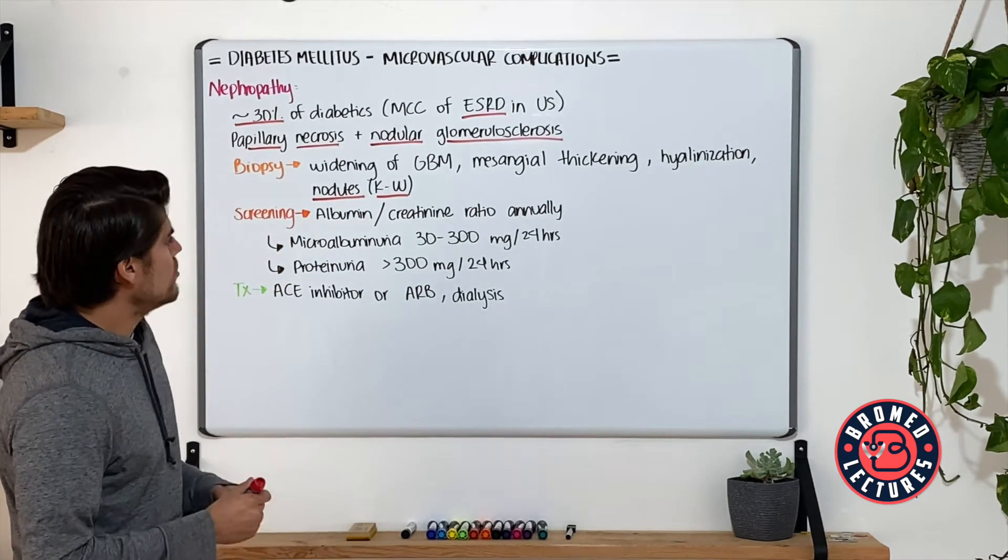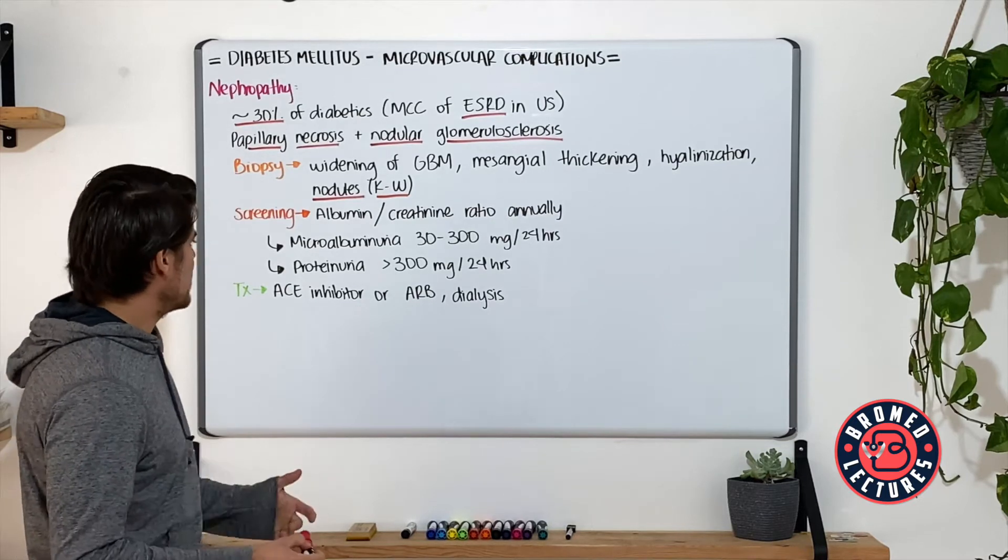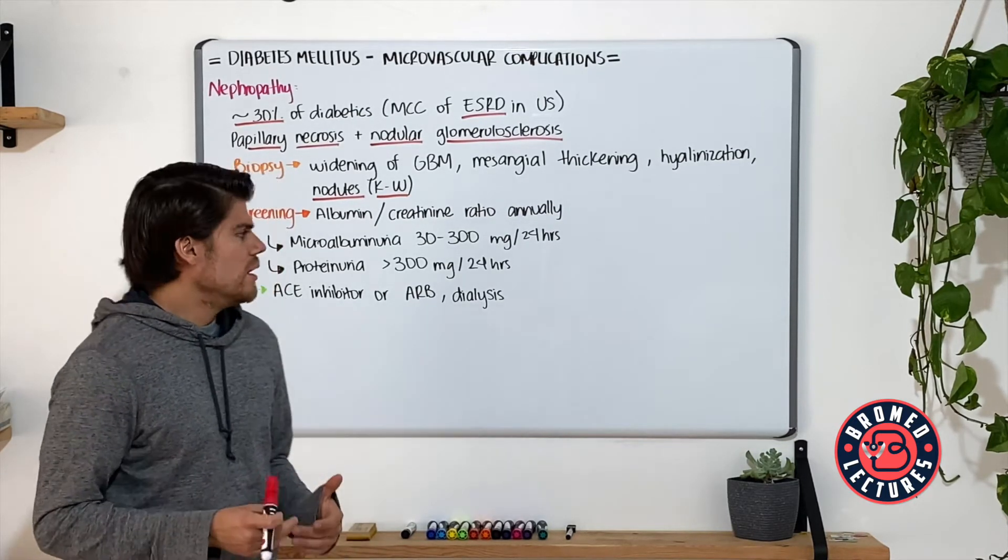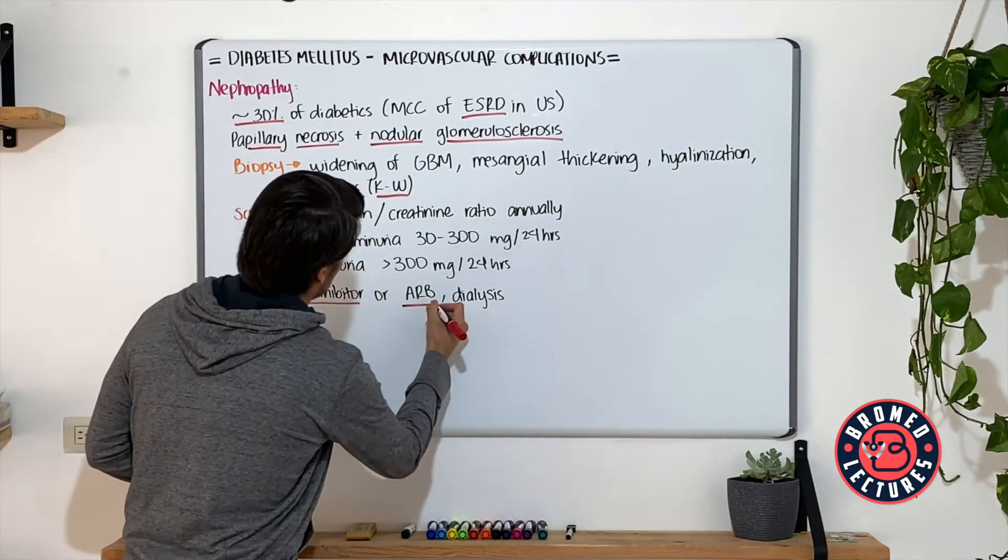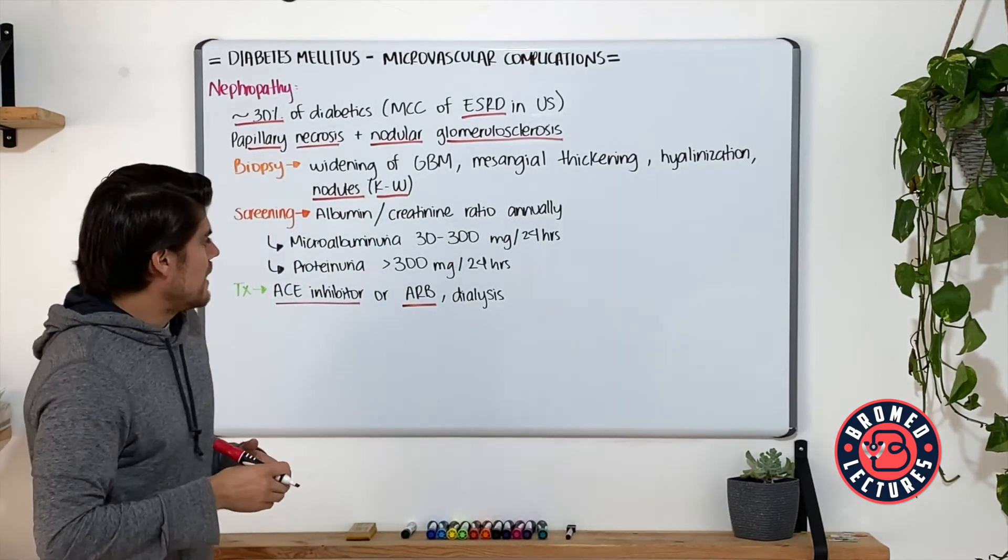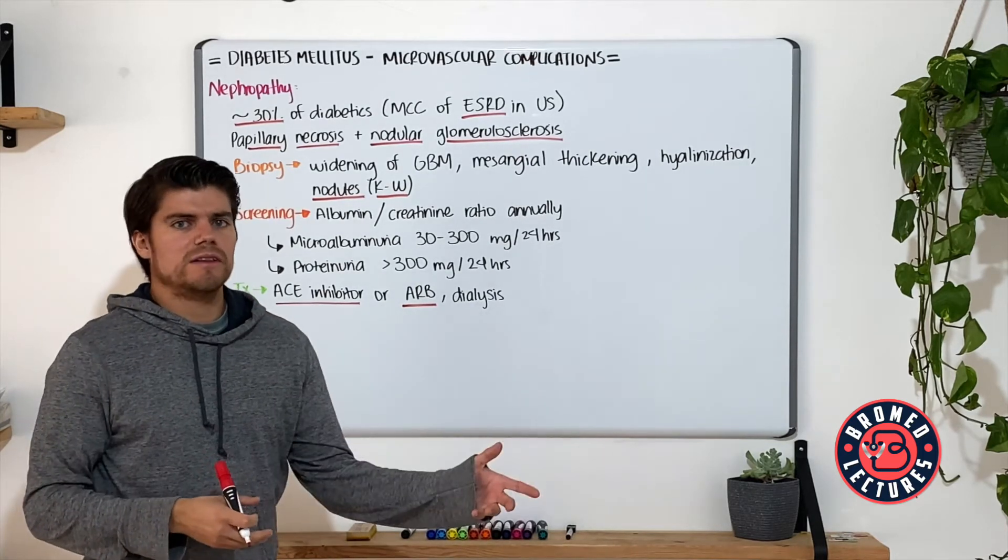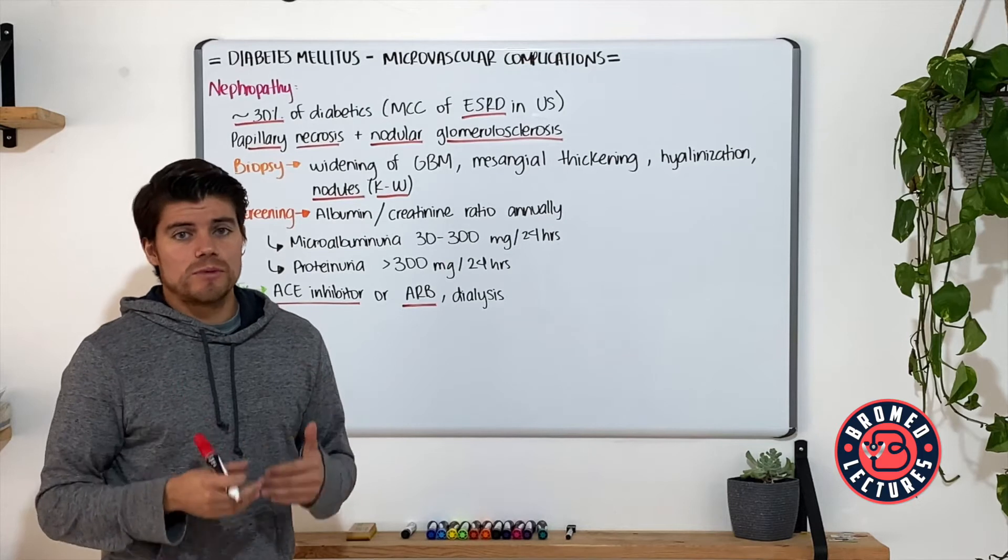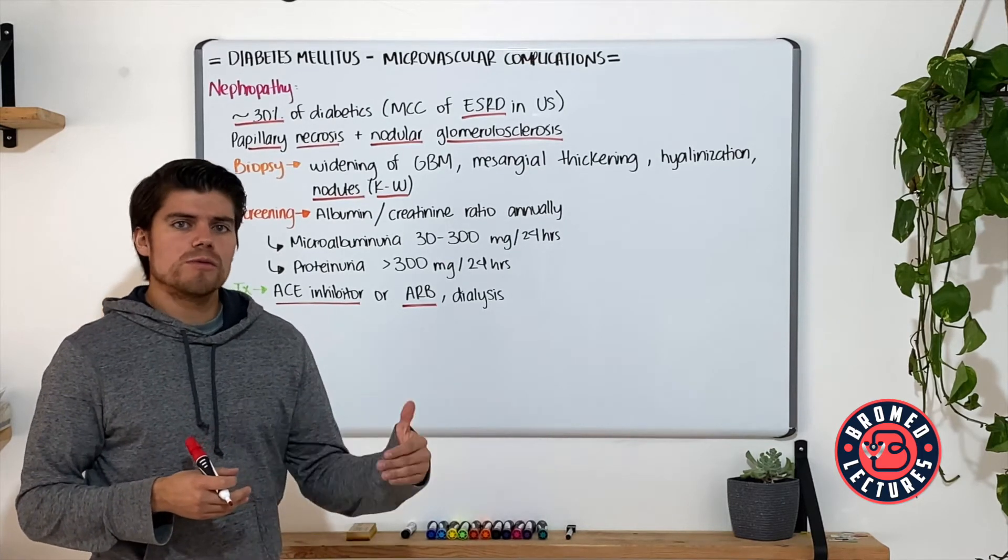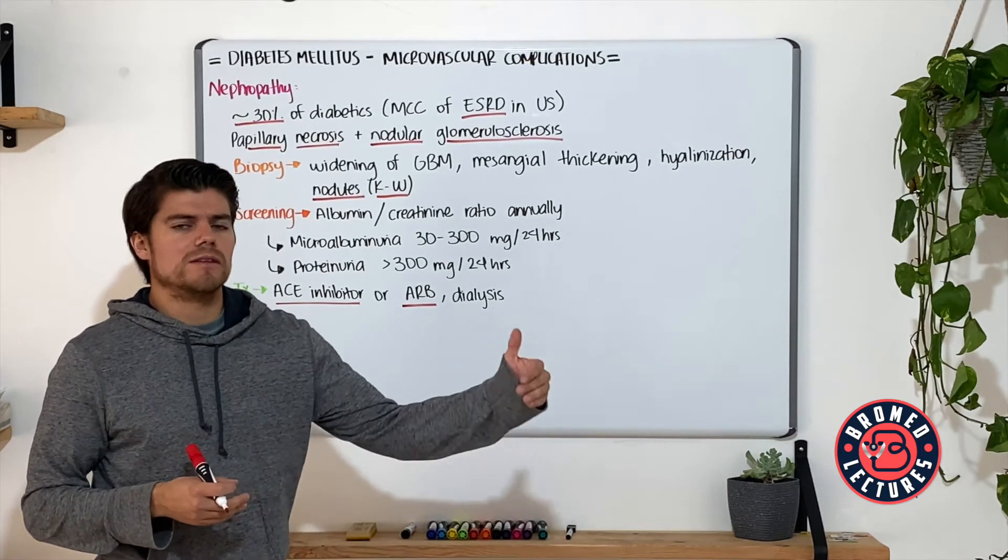What we do with these patients when they are already in the microalbuminuria stage is add either an ACE inhibitor or an aldosterone receptor blocker to vasodilate the efferent arteriole and reduce the intraglomerular pressure in these patients to slow the progression to end-stage renal disease.